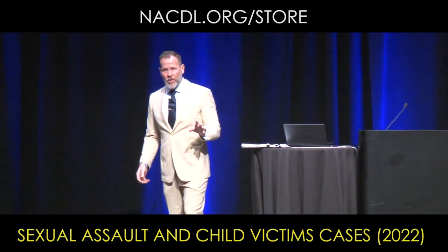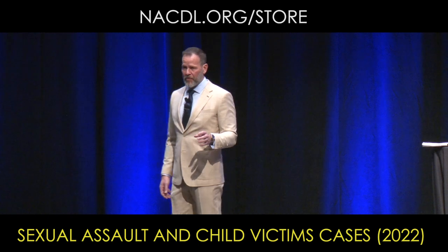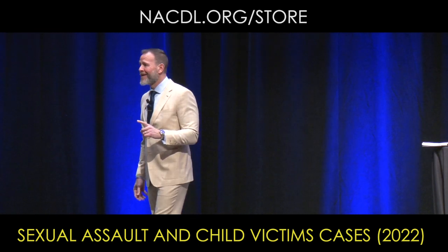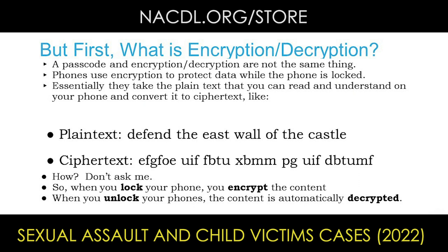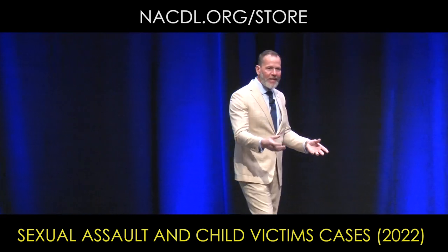Staying with phones — when you lock and unlock your phone, you are not just unlocking and locking your phone. You are actually, whether you know it or not, decrypting and unencrypting your phone. The phone companies have set this up so that we don't know it. What it does is take plain text, and when you lock it, converts it to what they call ciphertext — plain text being readable, ciphertext being unreadable. This is important because judges like to say this is like unlocking a box. It's not like unlocking a box — it's like unlocking a box and then translating all of the contents. And that's a Fourth Amendment distinction.